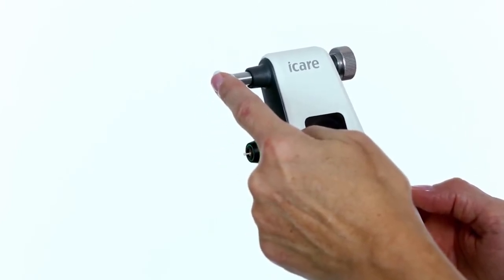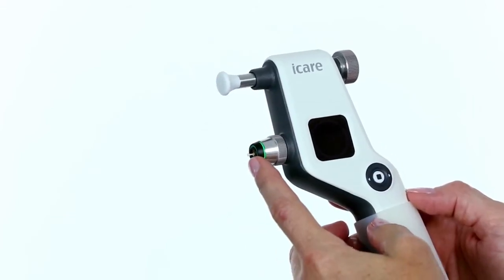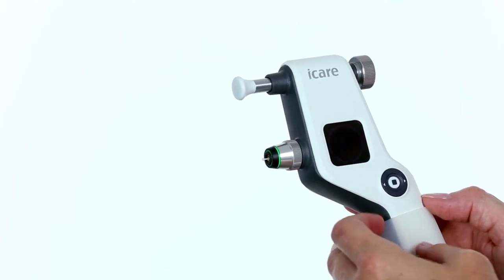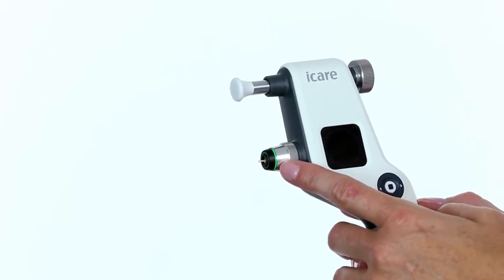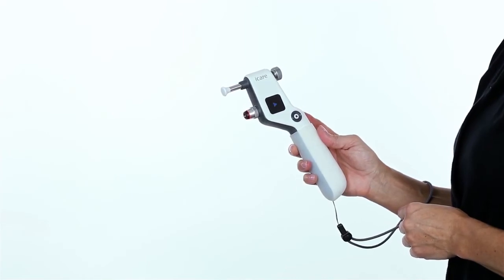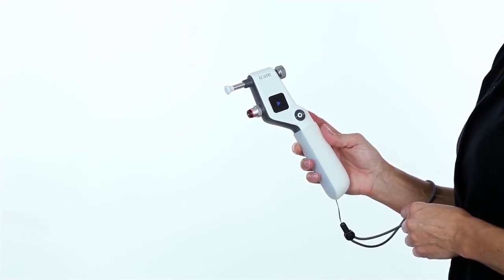Place the forehead support on the patient's forehead. Aim the probe in the center of the eye and the distance of the probe to the cornea should be four to eight millimeters. The green probe base light indicates proper alignment. If the probe base light is red, the alignment is incorrect.